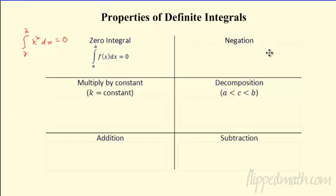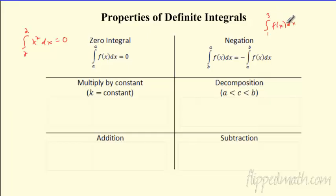Next is the negation property — this one will trip you up if you're not careful. We always go from the lower bound A up to the higher bound B. If you flip and go from B to A (high to low), you have to put a negative sign in front. So the integral from 3 to 1 equals the negative of the integral from 1 to 3. Always check your boundaries — if the high value is on the bottom, flip them and change the sign.